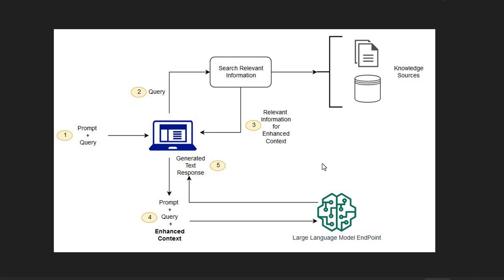This means the AI now has more context, making its response more accurate, relevant, and informative compared to a standard AI model that only works with the prompt alone. In the final step, the AI model processes the input and generates a text response. Since it had access to additional context, the response should be more aligned with the user's intent, providing better insights, accuracy, and relevance. The system then takes the AI-generated response and presents it to the user.